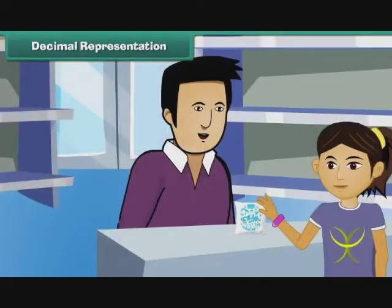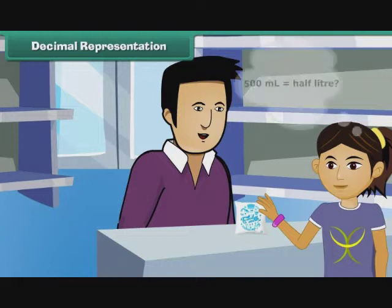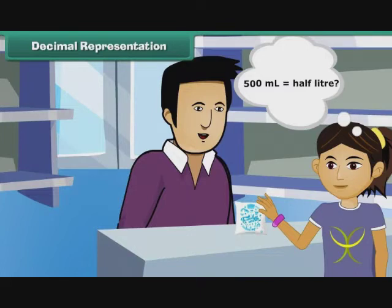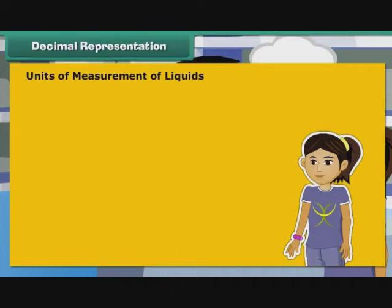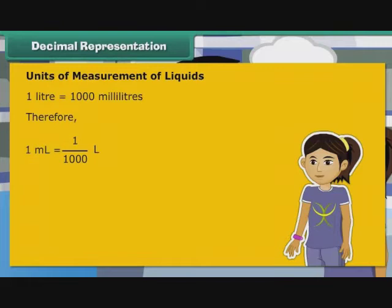Savita's mother asked her to get a half litre milk pouch from Mother Dairy. When she went to buy it, the person at the booth handed her a 500ml pouch. Savita was confused — is 500ml the same as half litre? To answer this, we must first understand the units used to measure liquids. 1 litre is equal to 1000 millilitres. Therefore, 1 ml is equal to 1 by 1000 litre, that is 0.001 litre.